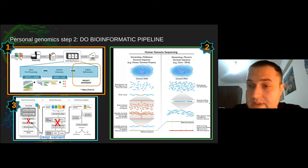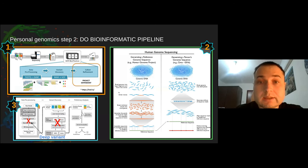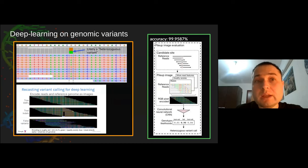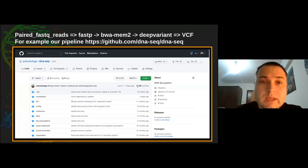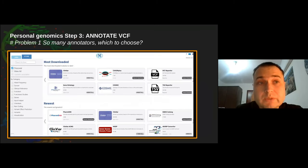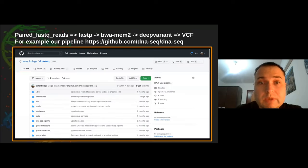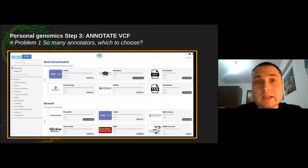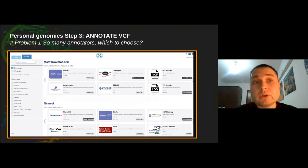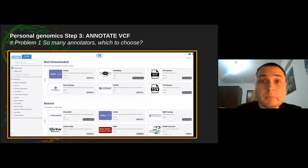I open-sourced everything. An anonymous contributor called Newton-Winter joined me, and we improved the pipeline to be better than Dante by adding deep learning-based variant calling and other tricks. We did three steps: assembling the genome, writing code, and when we got the annotated genome, we discovered there is a huge amount of ways to interpret the several million variants you get after the pipeline runs.